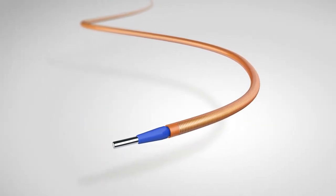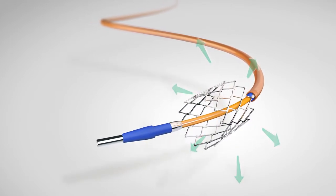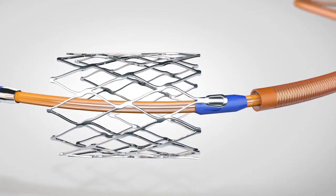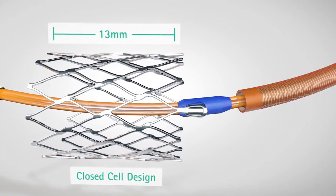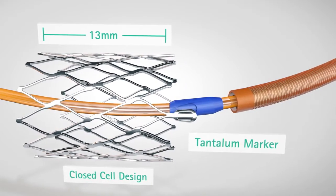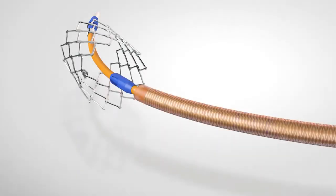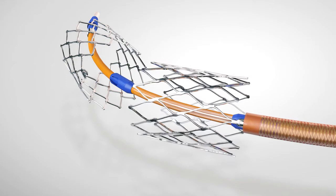Each self-expanding nitinol stent has a high radial force. The 13mm long stents have a closed cell design with tantalum markers on the proximal ends of the stents. The tantalum markers also help to prevent stent jumping.